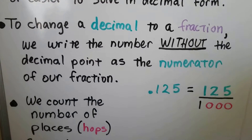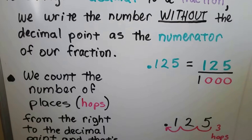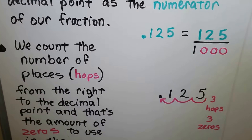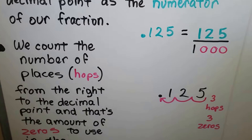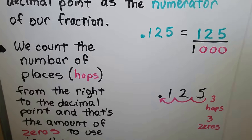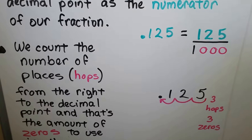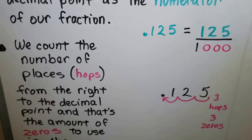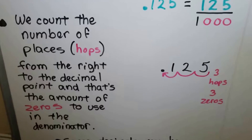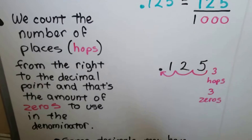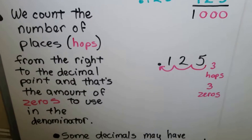To change a decimal to a fraction, we write the number without the decimal point as the numerator of our fraction. We count how many hops — how many places from the right to the decimal point — and that's the amount of zeros we're going to use in the denominator. We look at the place the last digit is in; that tells us our denominator.